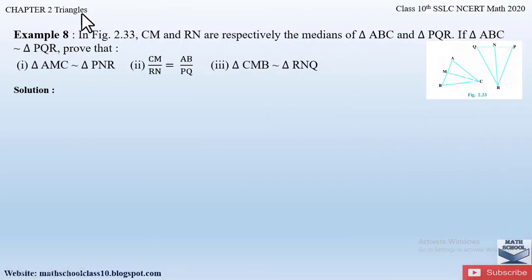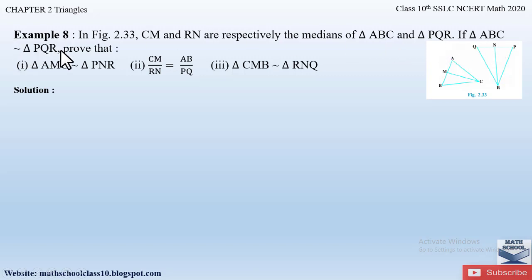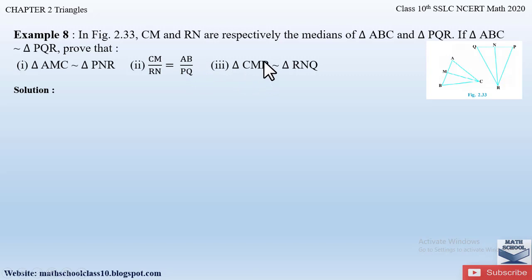Now let us begin with example number 8 from Chapter 2. The problem says: in figure 2.33, CM and RN are respectively the medians of triangle ABC and triangle PQR. If triangle ABC is similar to triangle PQR, prove that: first, triangle AMC is similar to triangle PNR; second, CM/RN = AB/PQ; and third, triangle CMB is similar to triangle RNQ.